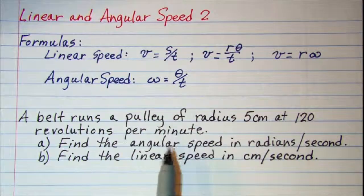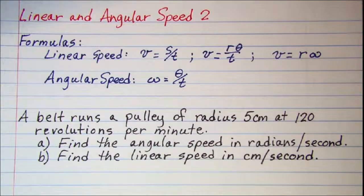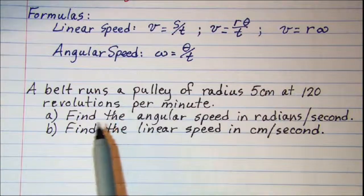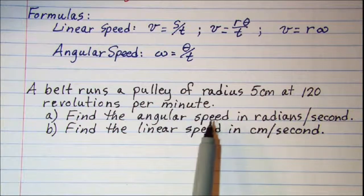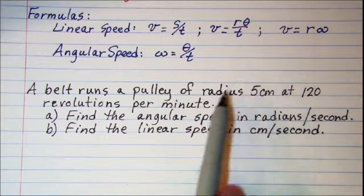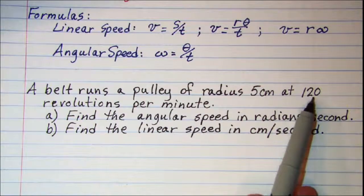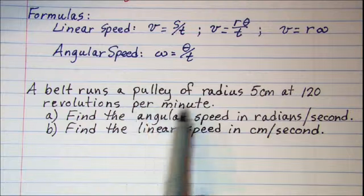Now I'll do these with formulas and then I'll look at them with unit multipliers as well. So the first thing that we want to do is find the angular speed in radians per second. Now what they're giving us is angular speed but it's 120 revolutions per minute.